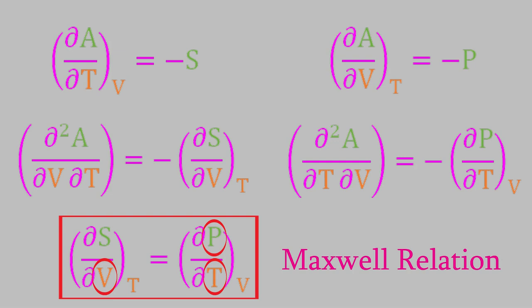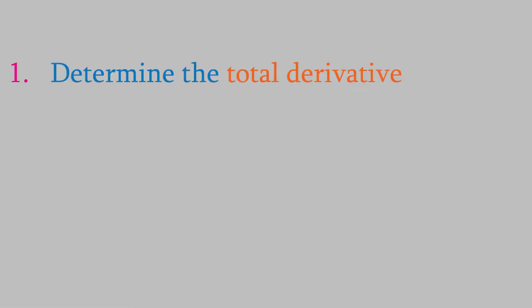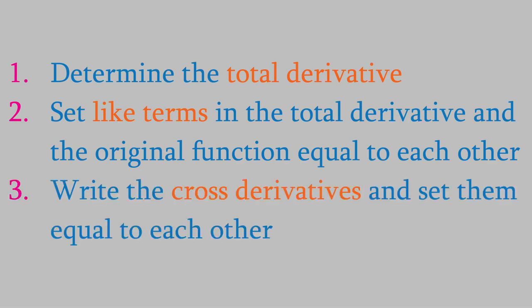This equation is especially useful because it allows us to determine the entropy by monitoring changes in pressure, volume, and temperature. What's even better is that this expression works even for real gases, not just ideal gases — that hasn't been true for some of the equations we looked at in earlier videos. So, we got this Maxwell relation by starting with our original equation for the Helmholtz free energy. We can get other Maxwell relations by starting with each of the other three equations. All we have to do is remember the three steps: first, determine the total derivative; next, set the partial derivatives equal to a variable in the original equation; and finally, take the cross derivatives and set them equal to each other.